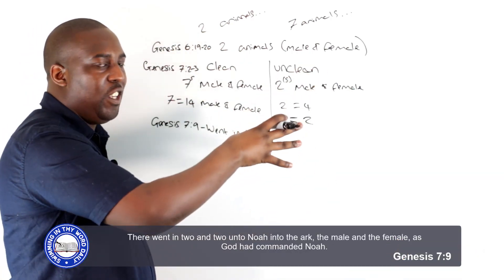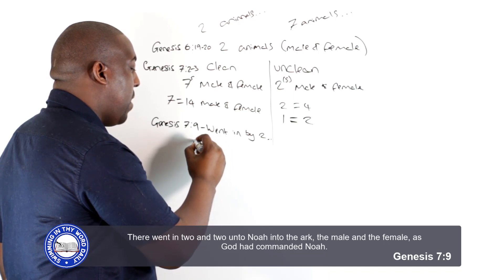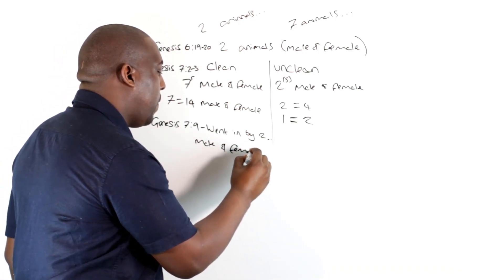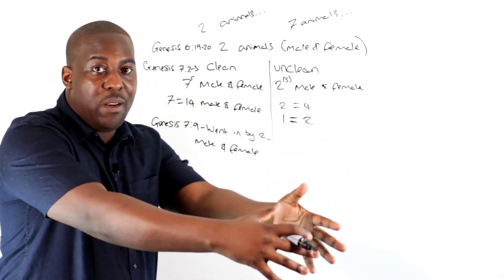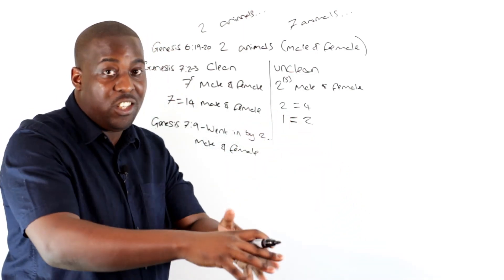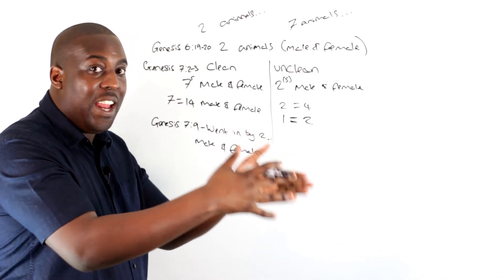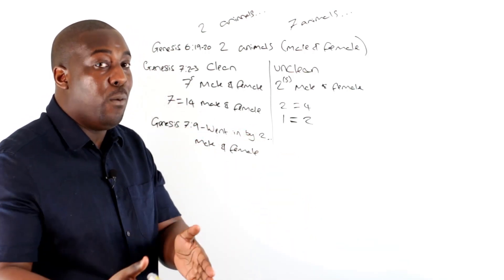That comes not too far later when it talks about how they went in by two. Now when you think about the whole context of what we've actually read, what's it talking about? It's talking about male and female. So the animals didn't just gate crash and try to rush into the ark. They went into the ark specifically in pairs, male and female, which makes sense.